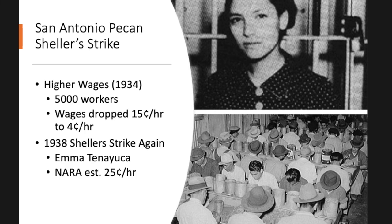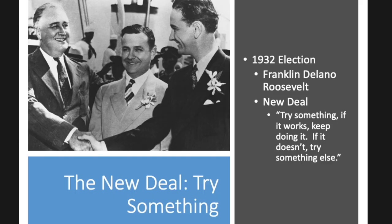Emma Tenayuca, pictured at the top of the screen, helped organize a strike in 1938. The National Labor Relations Board did establish pay at 25 cents an hour. But in the end, the pecan companies in San Antonio decided to switch to mechanized shelling, so many of these workers ended up losing their jobs anyway.